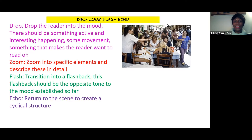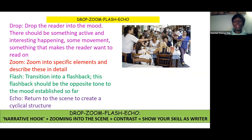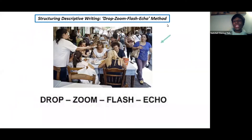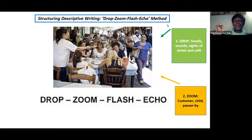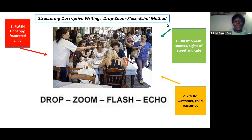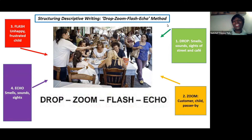For this specific assignment, you'd Drop into the sights, smells, and sounds of the street and the cafe. Then Zoom in to the customers, the children, the passers-by — everyone enjoying the lively and bustling atmosphere of the cafe and its surroundings. Your Flash would be a contrast — you could present an unhappy and frustrated child, maybe the child who refused to eat. And then your Echo would go back to the smells, sounds, and sights of the cafe.